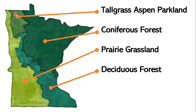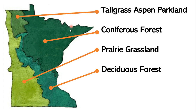We have tall grass, aspen parkland — which is the small part here. Note that this is just our state, but obviously if we looked at a bigger map, this continues into Canada too. It's not a hard line where the trees stop — it continues on. The biggest biome in Minnesota is the coniferous forest, then connecting to it is the deciduous forest, and then in an L-shape here is the prairie grassland.